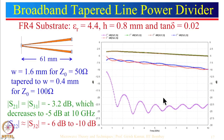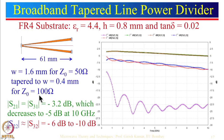We can also show a broadband tapered line power divider. The concept is simple: a microstrip line tapered from a width corresponding to 100 ohm impedance down to the width for 50 ohm. W = 1.6 mm for 50 ohm tapered to 0.4 mm — a linear tapered line.